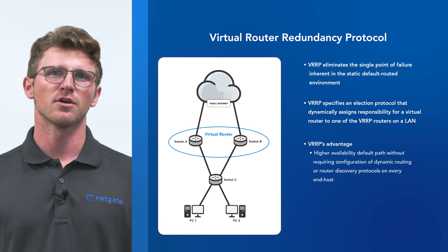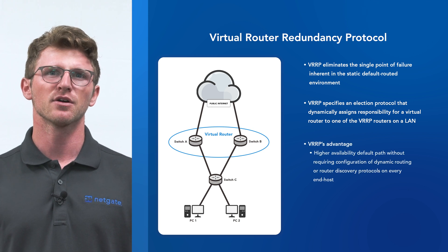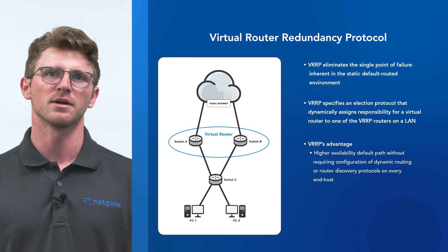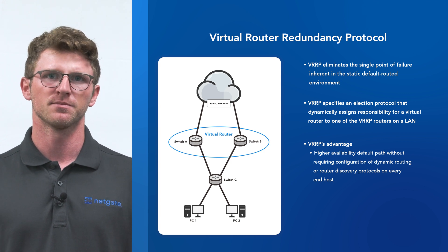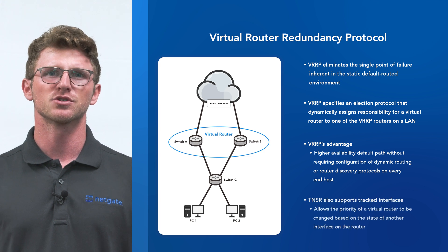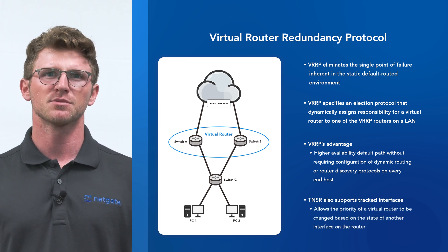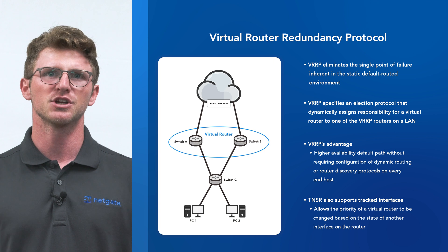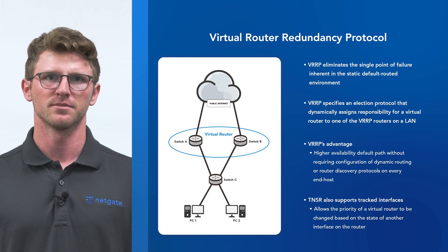The advantage gained from using VRRP is a higher availability default path without requiring configuration of dynamic routing or router discovery protocols on every end host. Tensor also supports tracked interfaces, which allows the priority of a virtual router to be changed based on the state of another interface on the router.